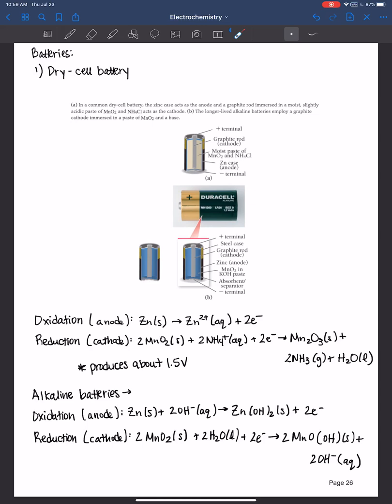The first one that you commonly use in your household, the dry cell batteries, maybe more specifically the alkaline batteries. I know I use these quite a lot with my little kids toys. Basically in a common dry cell battery, the zinc case acts as the anode. And then there's this graphite rod immersed in a moist and slightly acidic paste of manganese four oxide and ammonium chloride. That acts as the cathode. So it looks like we're in slightly acidic solution here, and it produces about 1.5 volts.